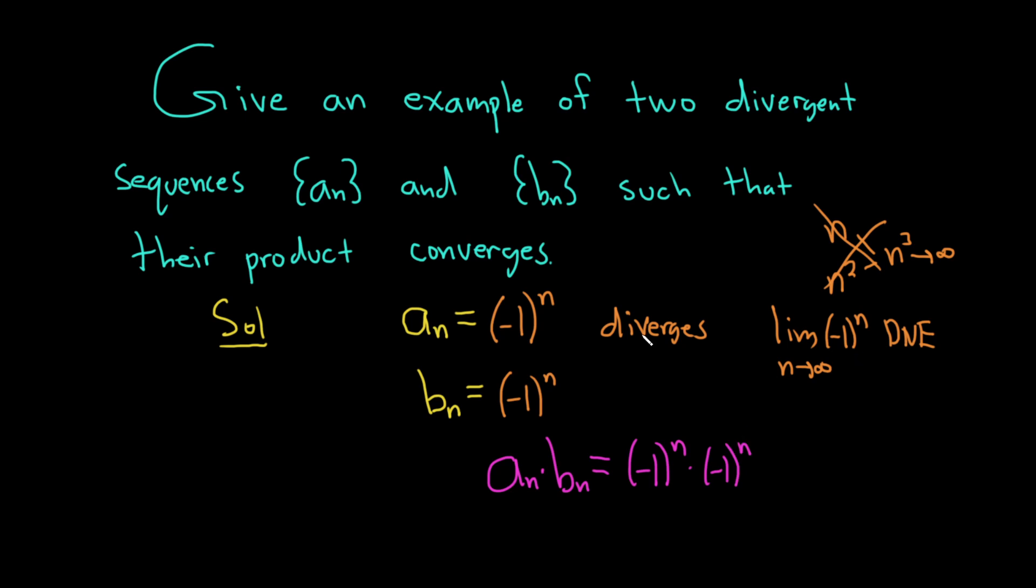What happens here is you basically add the exponents because the bases are the same. So you get negative 1 to the n plus n, so that's 2n. And 2n is always an even number. That's the definition of an even number, if you can write it as 2 times an integer. So negative 1 to an even power is always 1.